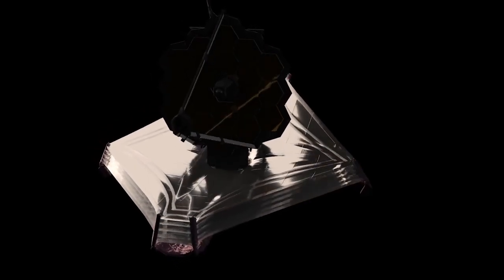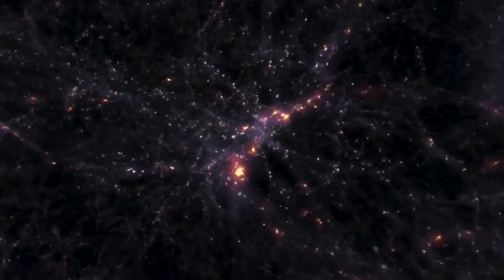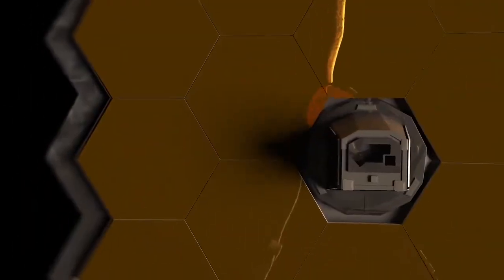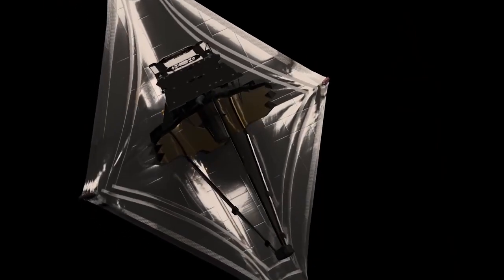This means that the JWST needs to be kept at a temperature between minus 223 degrees Celsius and minus 370 degrees Fahrenheit to keep working. This is so that the infrared light from the telescope doesn't get in the way of the light that is being collected.